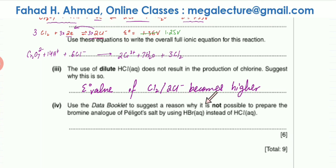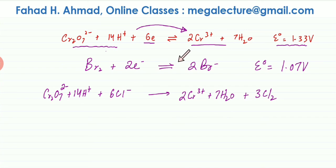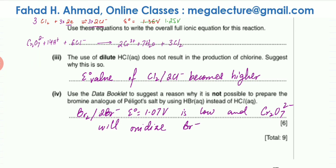Part c(iv): use the data booklet to suggest why it is not possible to prepare the bromine analogue of Péligot's salt using HBr instead of HCl. Replacing the Cl⁻ equation with the Br₂/Br⁻ equation shows a significantly lower E° value. Unlike chlorine where the value was very close to 1.33 V, bromine's E° is always lower than Cr₂O₇²⁻. So Br⁻ would always be oxidized regardless of concentration — a redox reaction always occurs, and the analogue salt cannot be prepared.